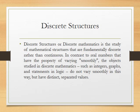In contrast to real numbers, which have the property of varying smoothly, the objects studied in discrete mathematics — such as integers, graphs, and statements in logic — do not vary smoothly in this way, but have distinct, separated values. These are not smooth values; they are separated, distinct values. So in discrete structures, we study all such discrete values.